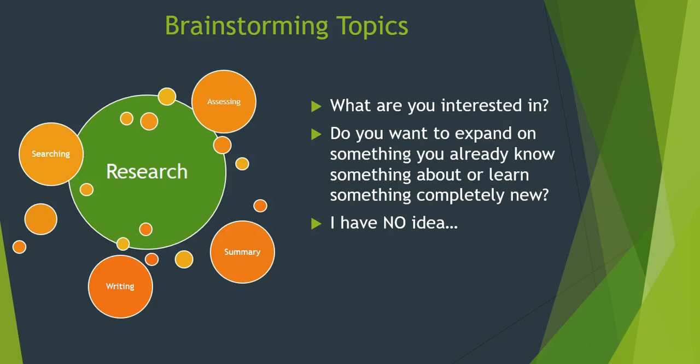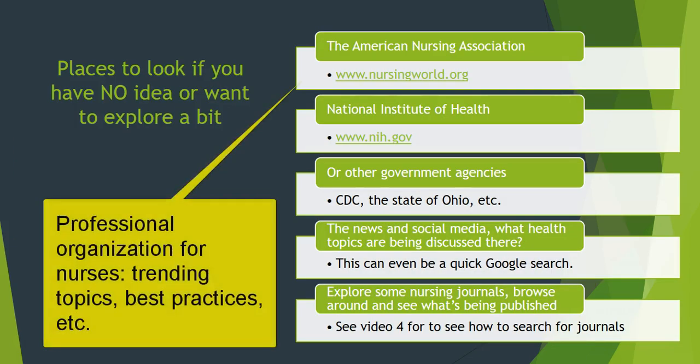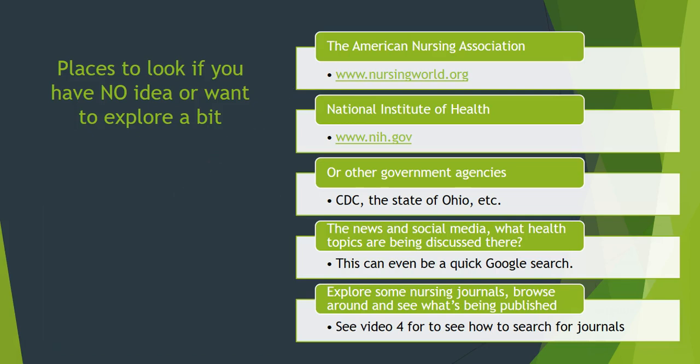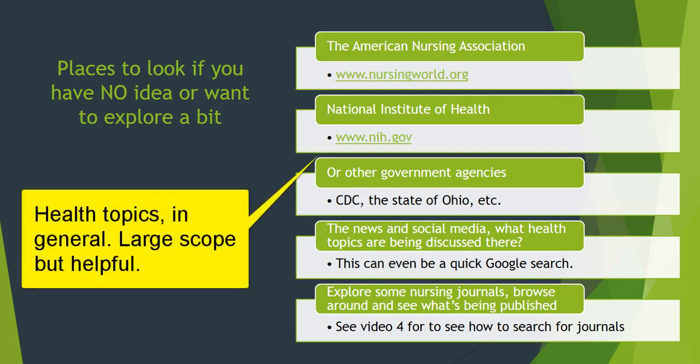So what if you have no idea what your topic is — how do you come up with one? Let's talk about some places to look. The American Nursing Association is an excellent place to tap into. This is a professional organization all about nursing, and they have trending topics, information about best practices and guidelines, as well as the general scope of nursing. It's a great place to get an idea of what nurses are talking about and what their interests are.